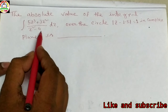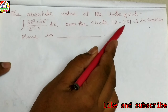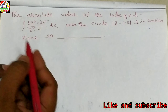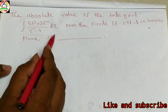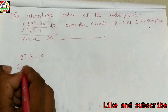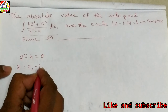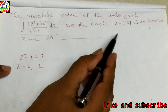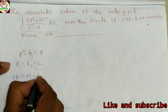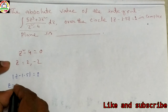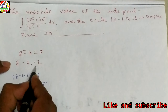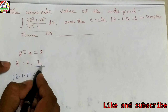Now we discuss another important problem: the absolute value of the integral of (5z³ + 3z²)/(z² − 4) dz over the circle |z − 1.5| = 1. The denominator z² − 4 = 0 gives poles at z = 2 and z = −2. The circle |z − 1.5| = 1 spans from 0.5 to 2.5, so z = −2 lies outside the contour and is not considered.